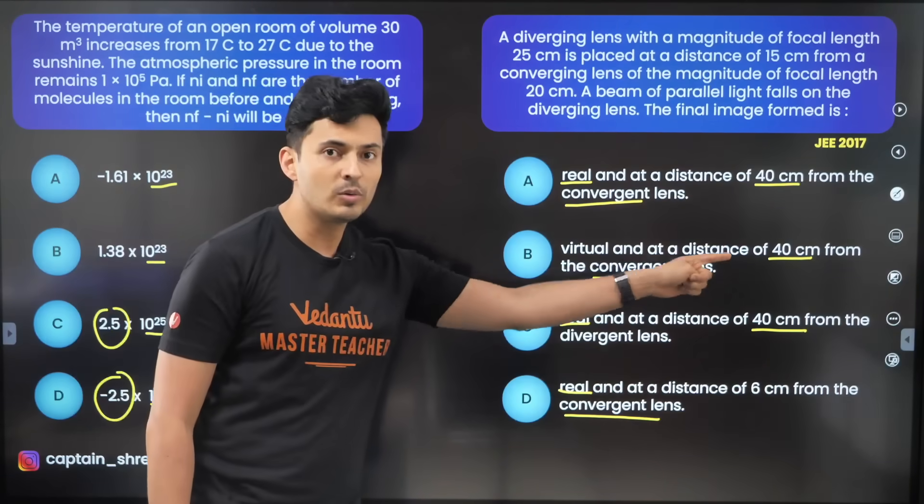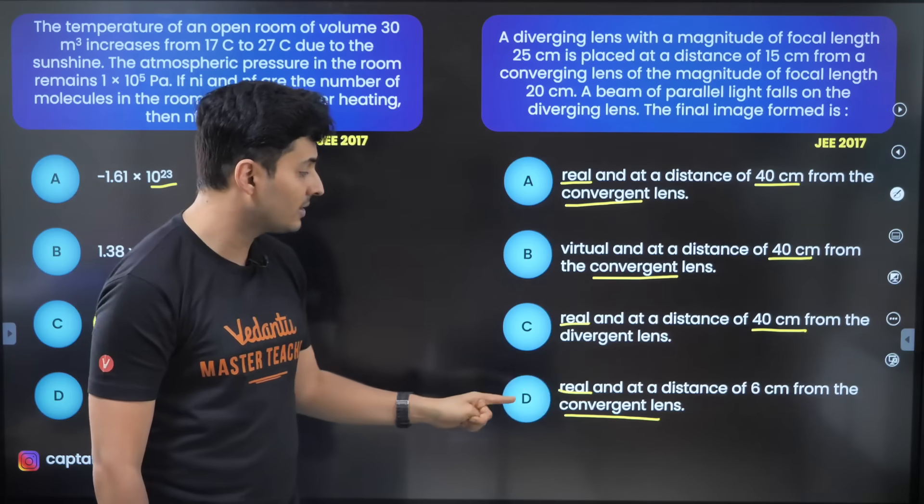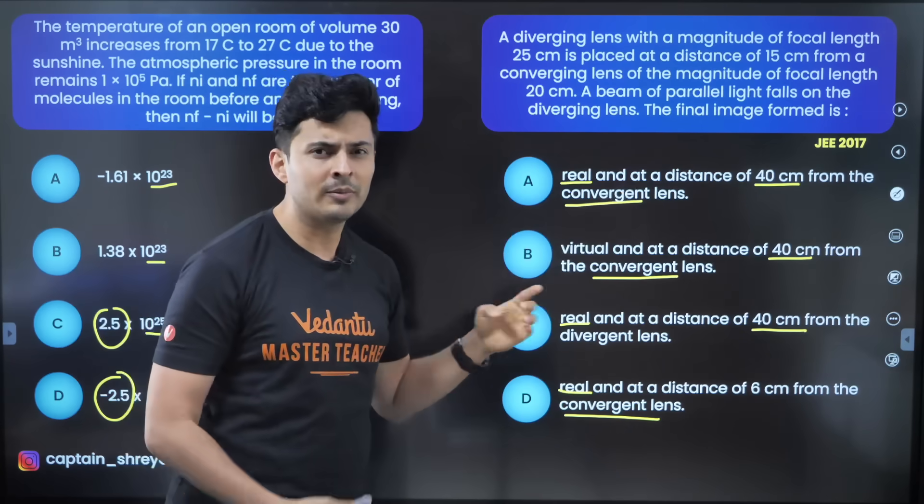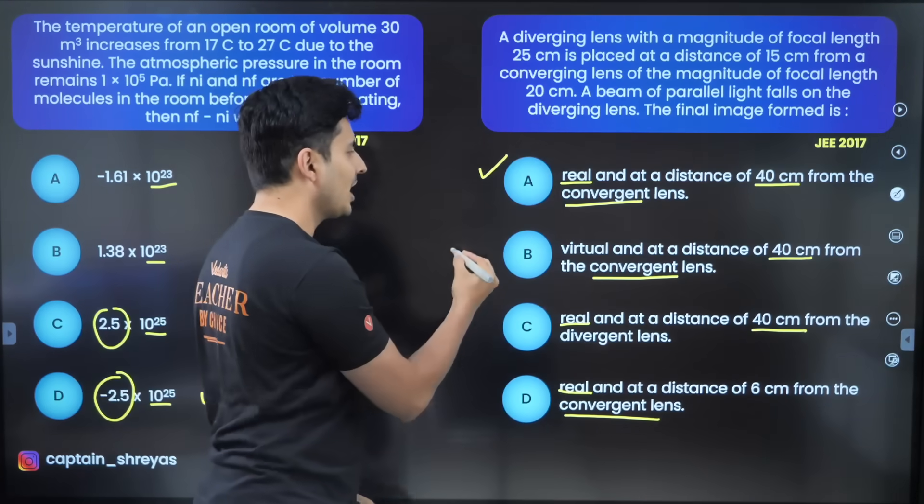This option has two things in common. This has two things in common. This has two things in common. This has three things in common. So if I had to make a guess I'll most likely choose option A.